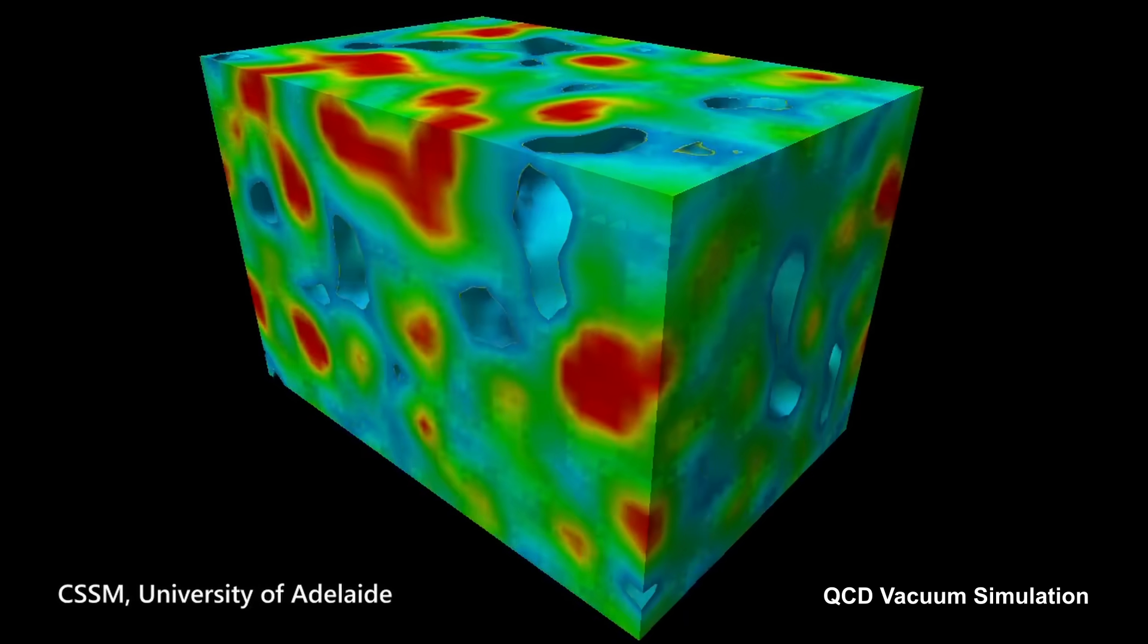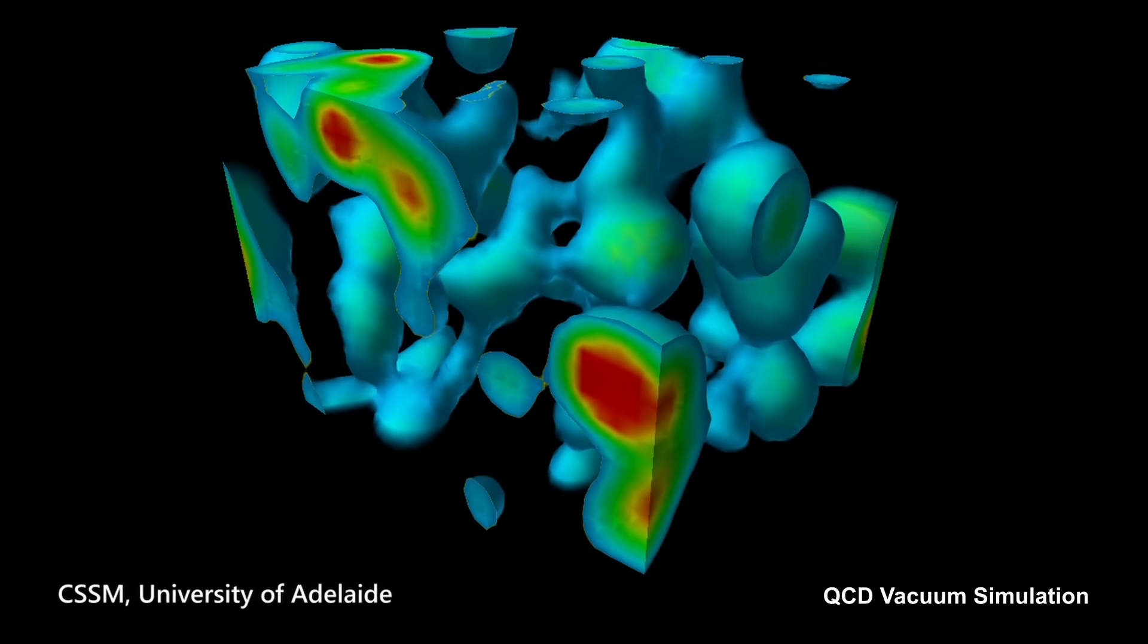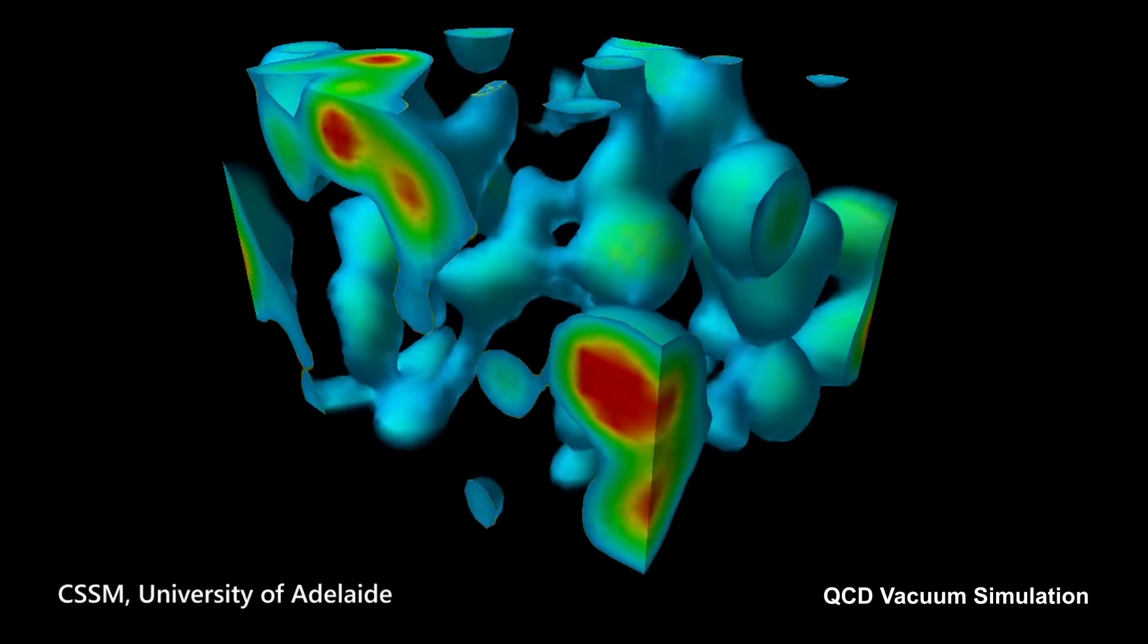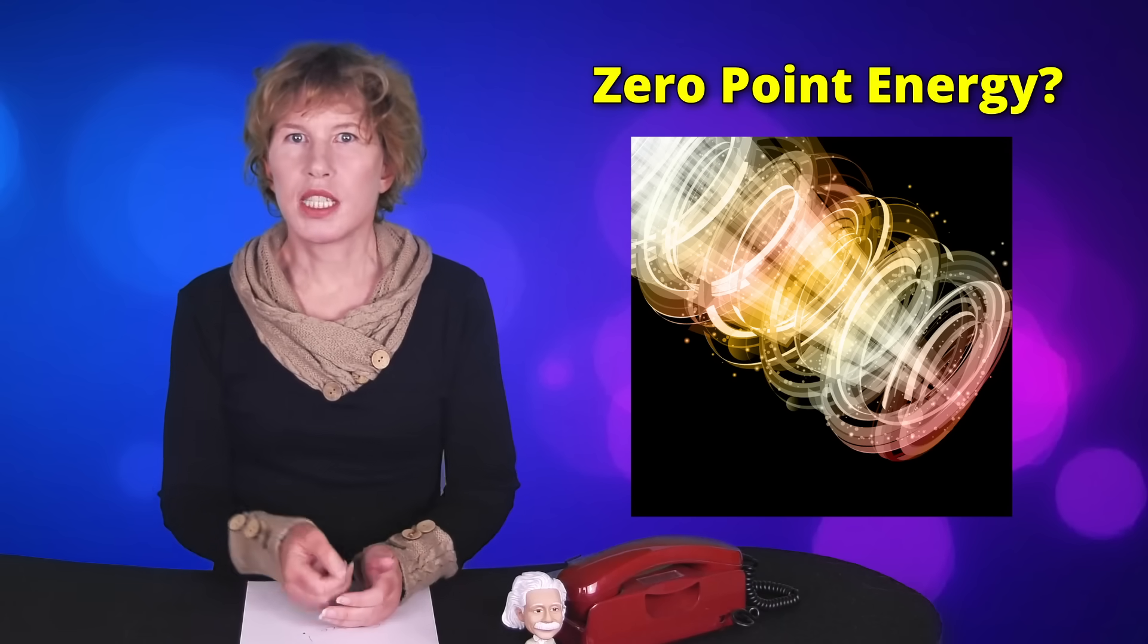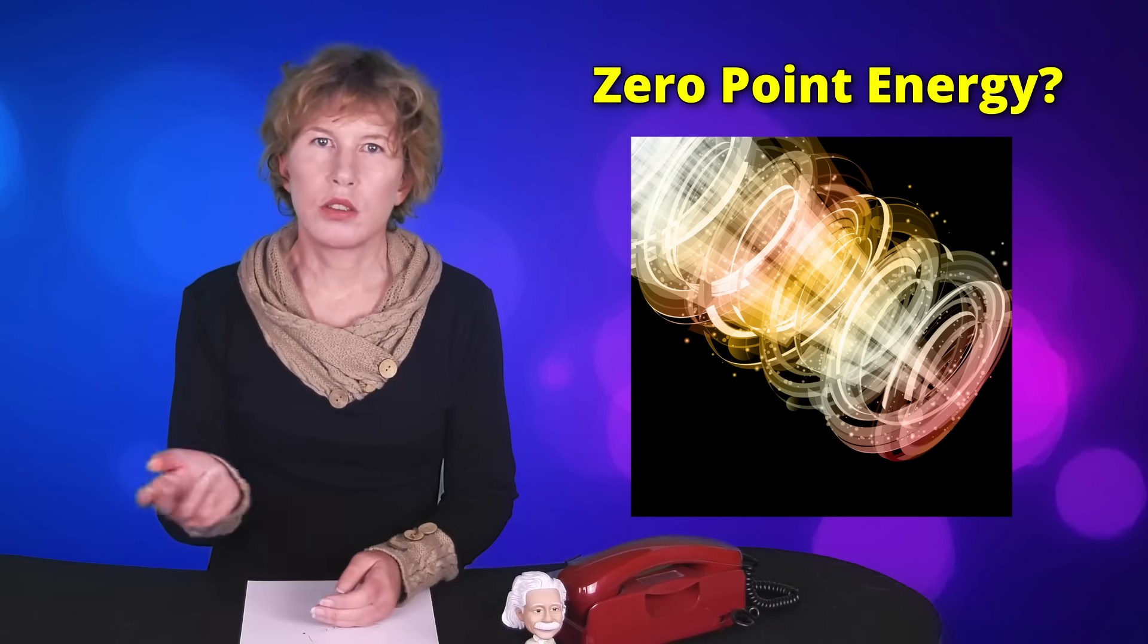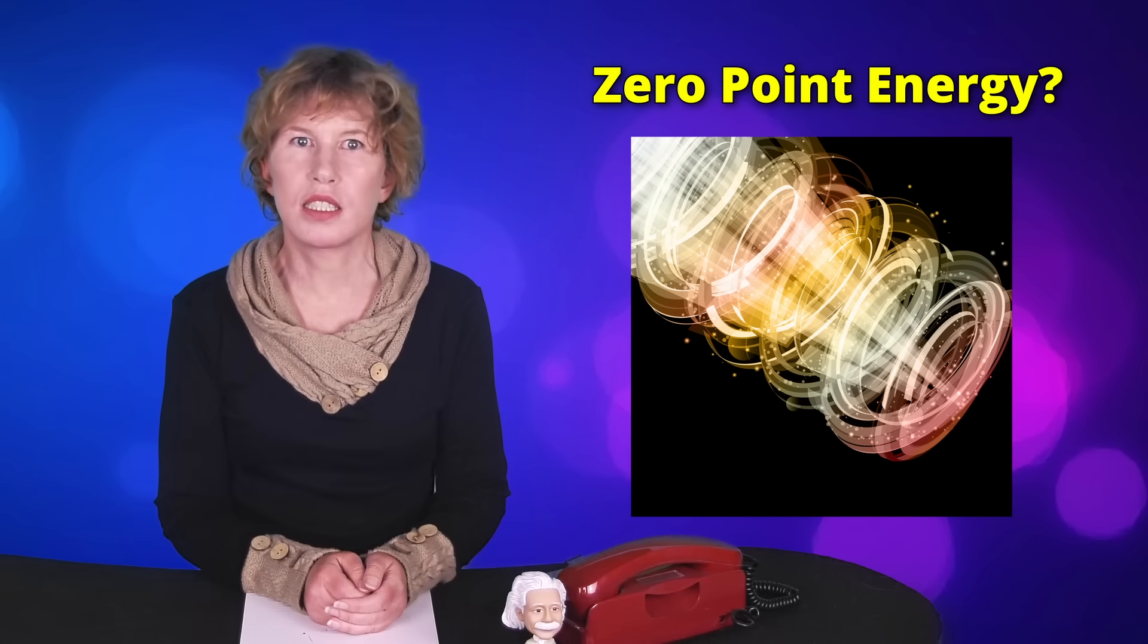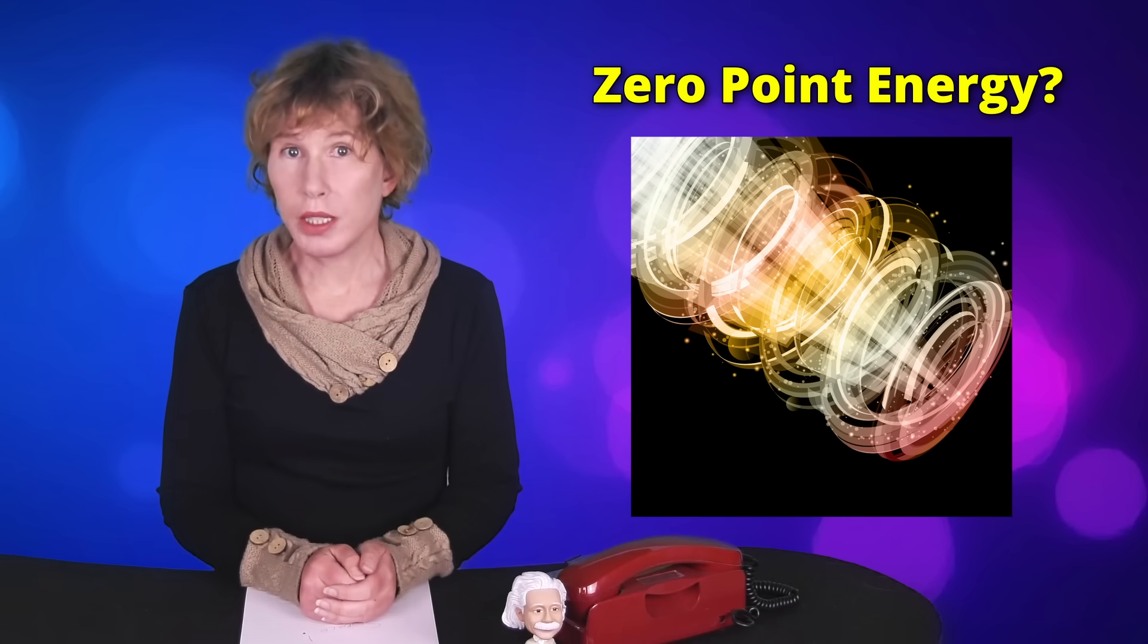You've probably heard some physicists say that even empty space isn't really empty, that it contains something called vacuum fluctuations or zero point energy, and that it's got something to do with the cosmological constant. There are also a bunch of guys who think that we can extract this vacuum energy and drive machines from it. Well, you already know that this doesn't work because if it did, someone would be taxing it. But just why does it not work? That's what we'll talk about today.